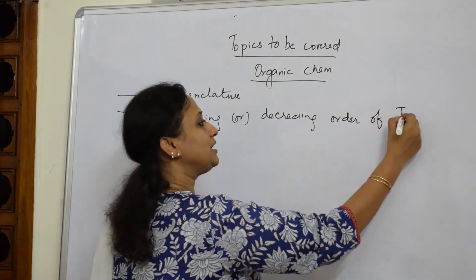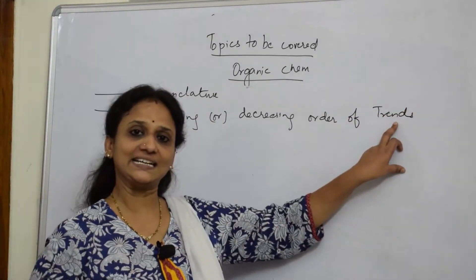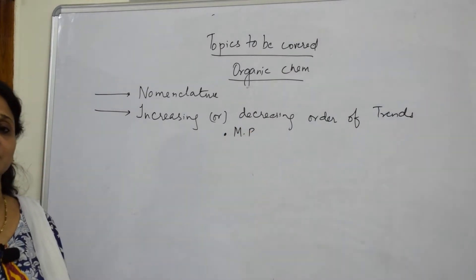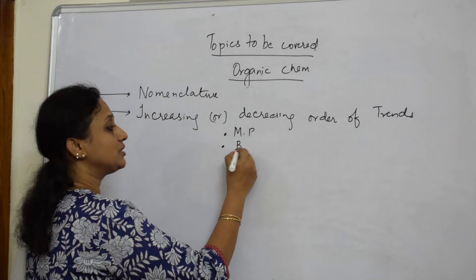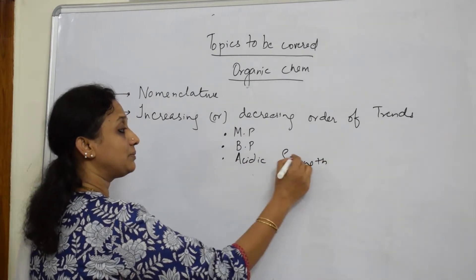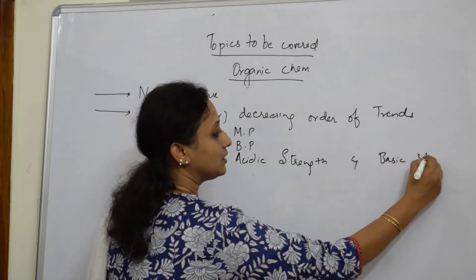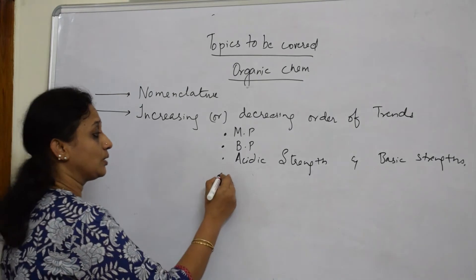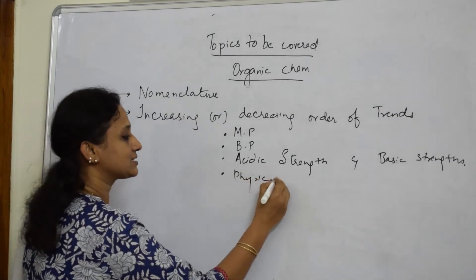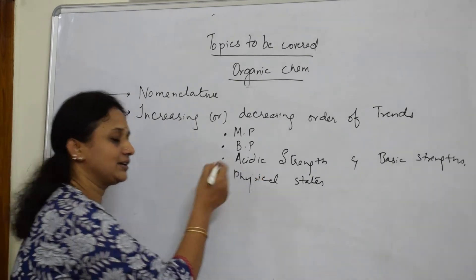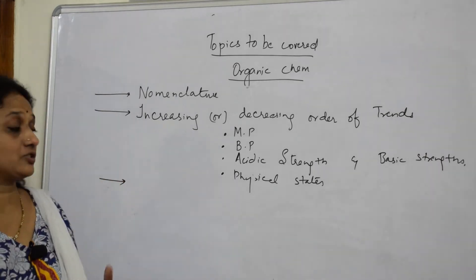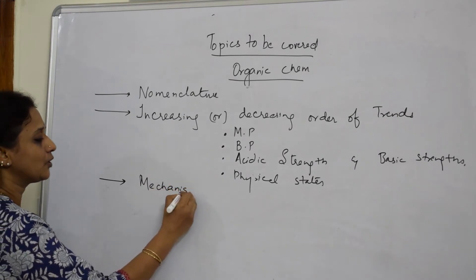After nomenclature, questions are asked on increasing or decreasing order of trends. The word 'trends' includes questions based on melting point, boiling point, acidic strengths, basic strengths, and physical states — for example, why a particular compound is higher than another, or why it exists in crystal lattice form.